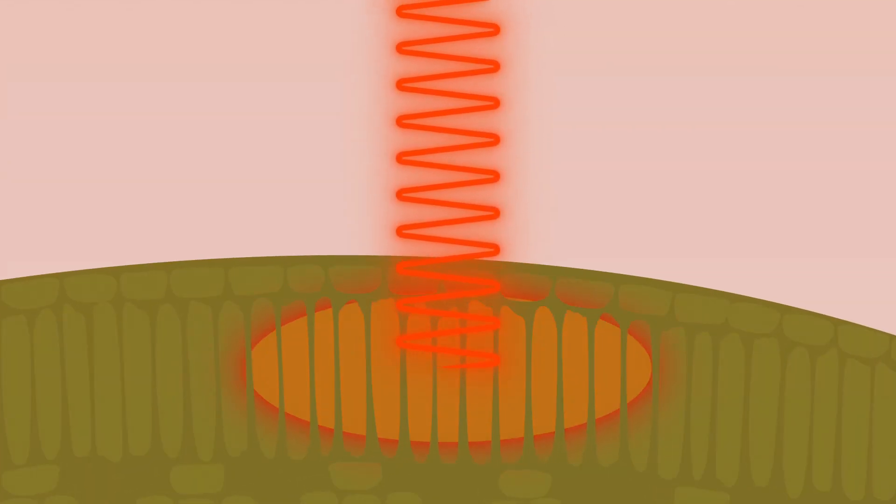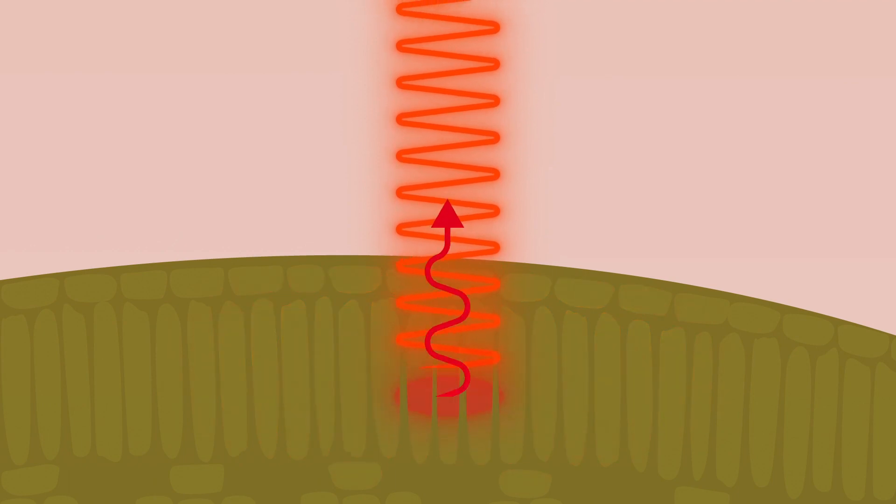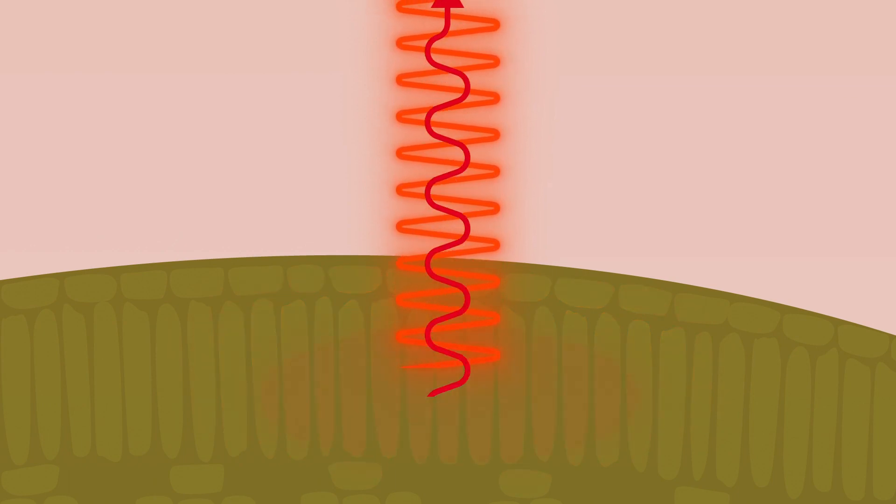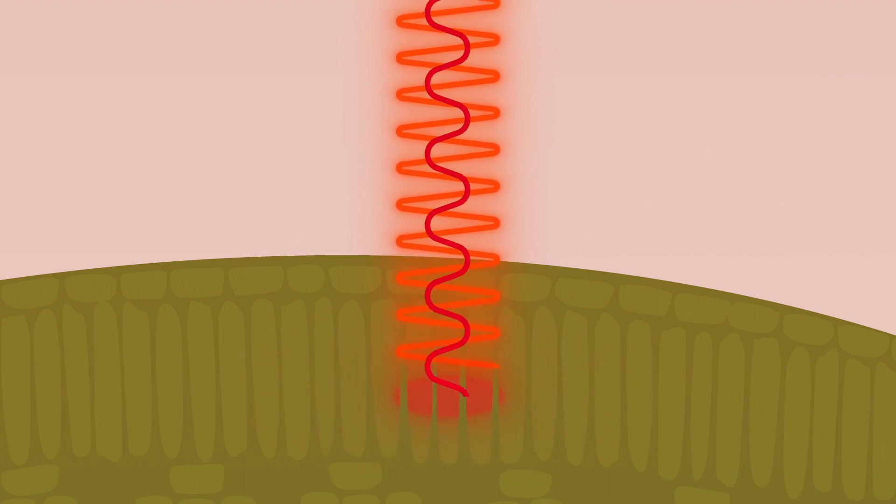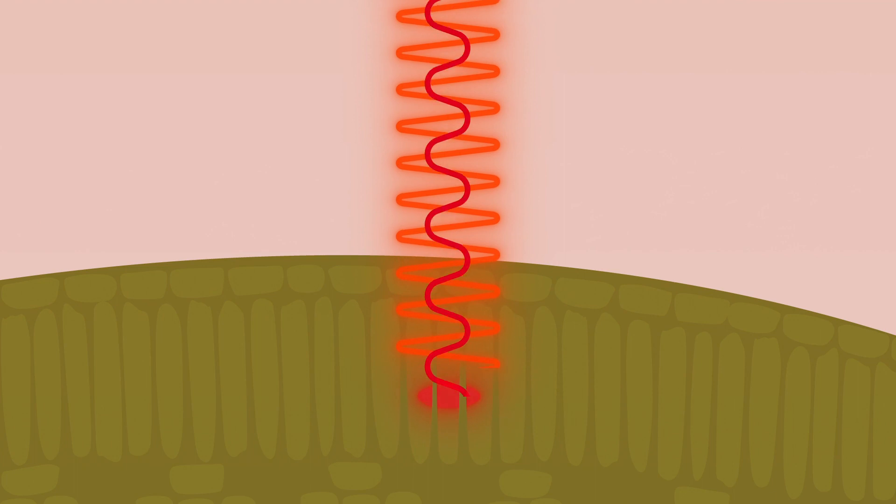But in turn, the plant also re-emits a very small portion of infrared light from the chlorophyll molecules. This is called chlorophyll fluorescence. The more chlorophyll the plant contains, the more infrared light it emits.